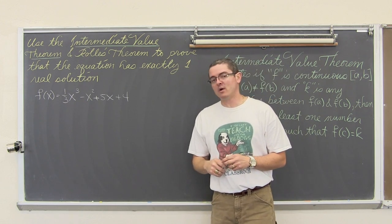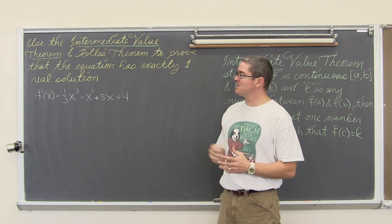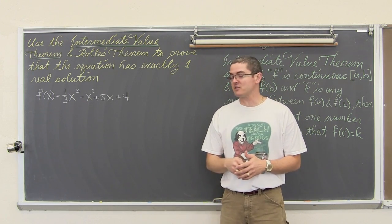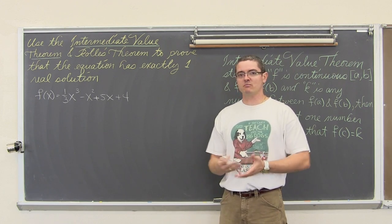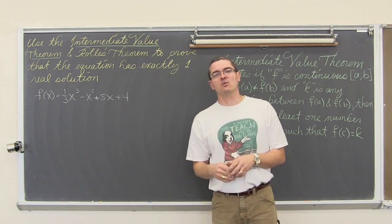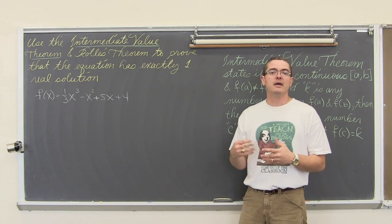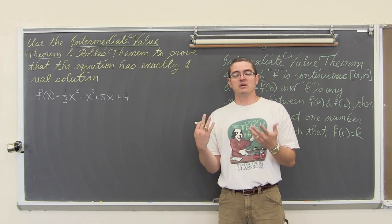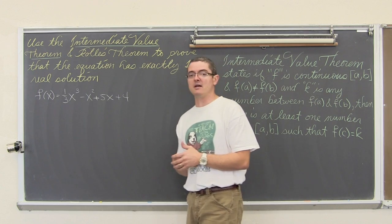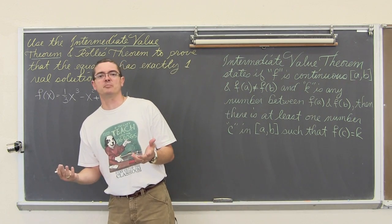The function is f equals one third x cubed minus x squared plus five x plus four. Now of course we can type this in our graphing calculator and see it only crosses the x-axis once, but how can we actually apply Rolle's Theorem and the Mean Value Theorem to get to that conclusion using calculus and not being able to just sort of cheat and look at a picture.